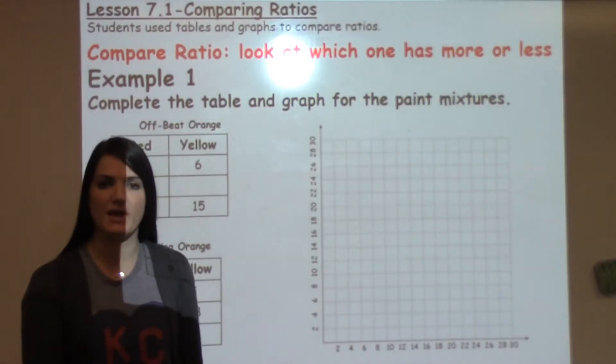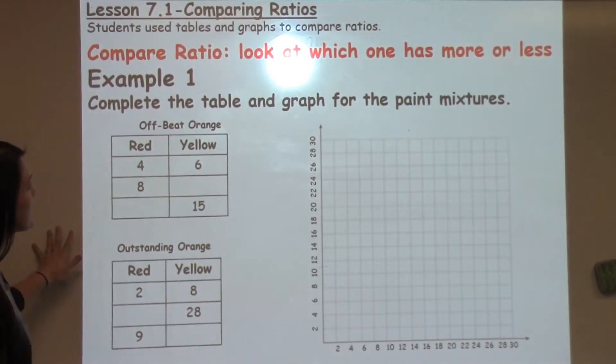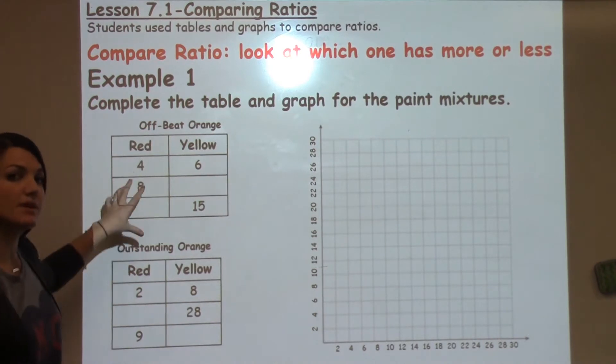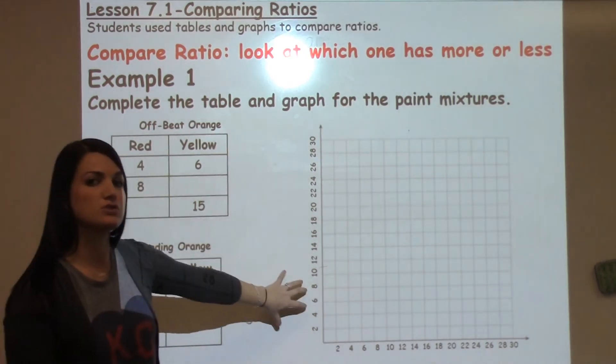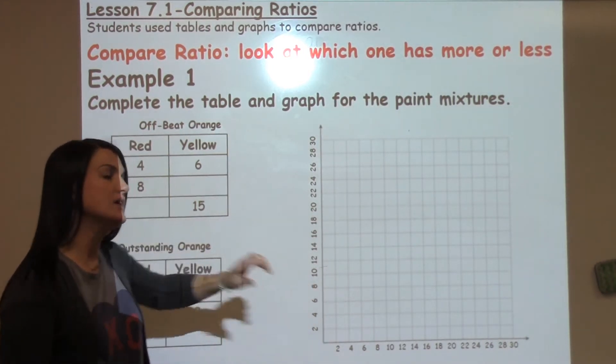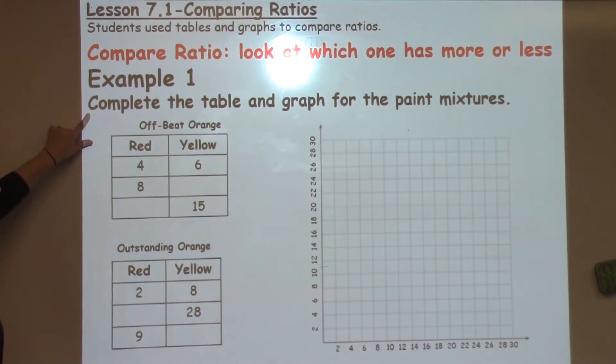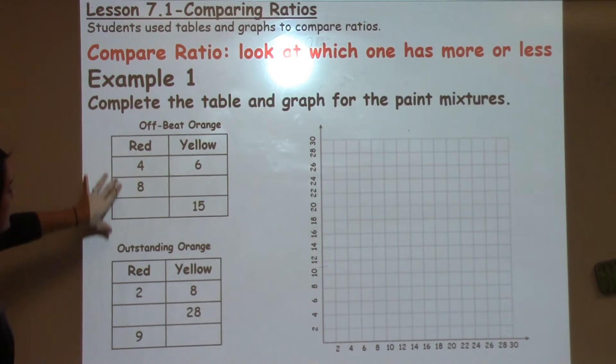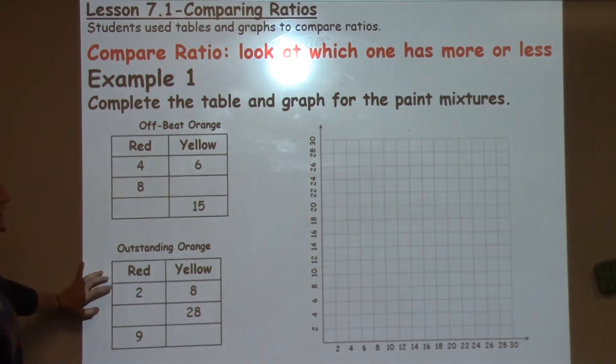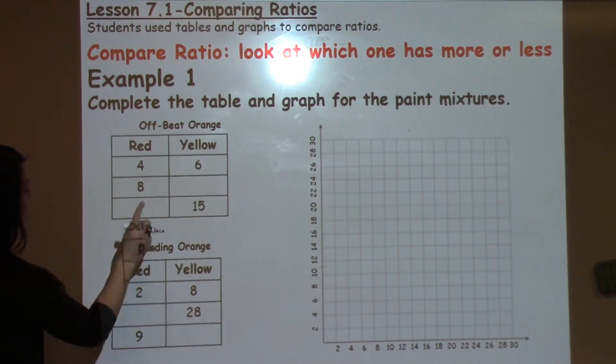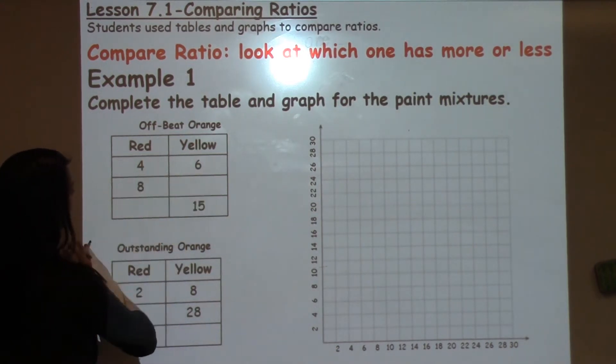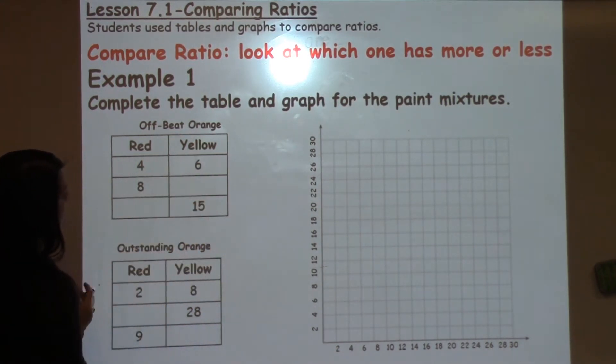Welcome to 7.1's Math Moment. Today's students learned about comparing ratios and took information from a ratio table and showed that same information in a graph. We're going to look at the first example where it says to complete the table and graph for the paint mixtures. We have two different paint mixtures, offbeat orange and outstanding orange, and we have different ratios of red and yellow paint. So we need to complete the ratio table first before graphing it on the grid.